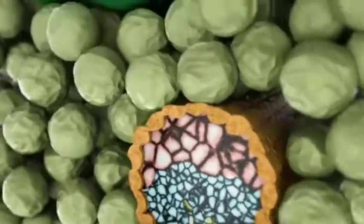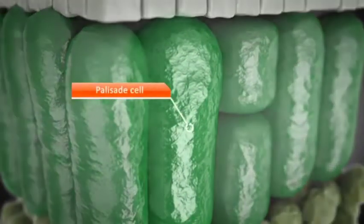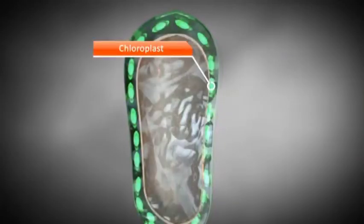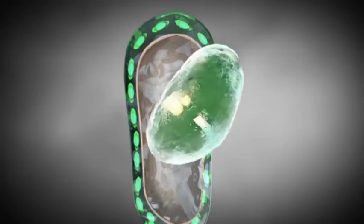The palisade cells can be found on top of these veins. Palisade cells contain many chloroplasts, which can be seen here as green dots. Chloroplasts absorb a major portion of the light energy used for photosynthesis. So let's have a look at one of them.